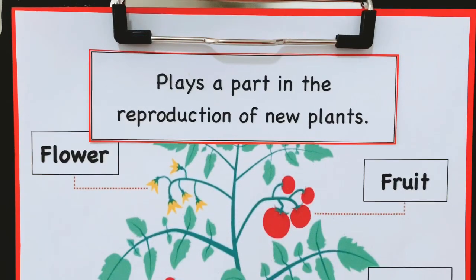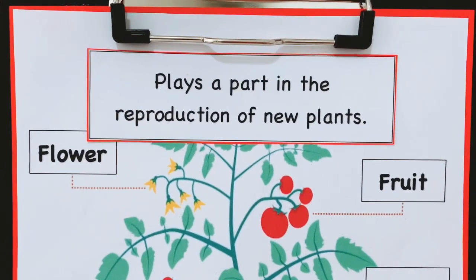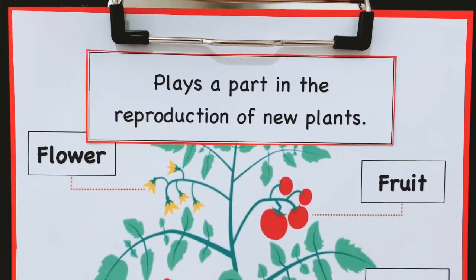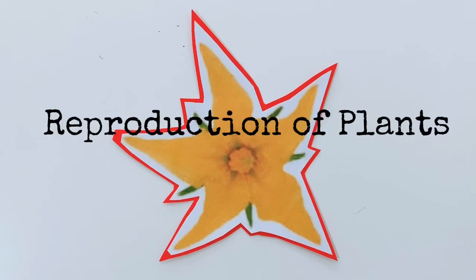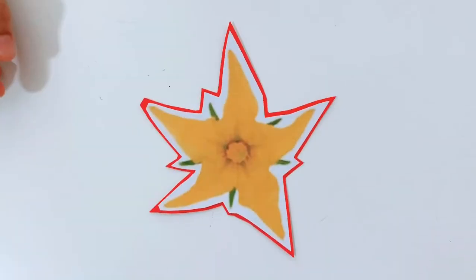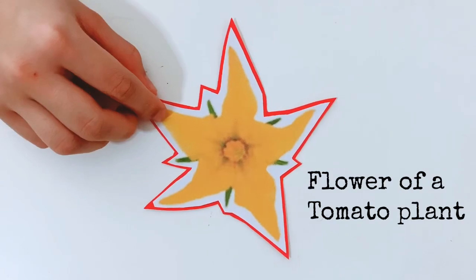Both the flower and the fruit play a part in the reproduction of new plants. This is what happens in the reproduction of plants. This is a picture of a tomato flower.